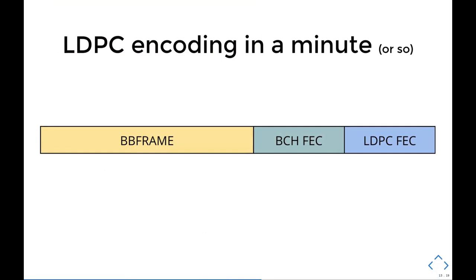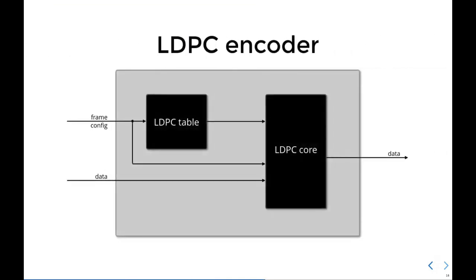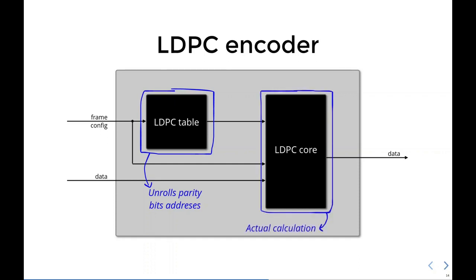To understand the implementation, I'm gonna divide and conquer. The LDPC encoder is actually made up of two sub-components: the LDPC table and the LDPC core. The LDPC table essentially unrolls the parity bit addresses, which means it deals with selecting the correct base parity bit address table given the frame length and the code rate. It will track groups of 360 bits, add Q to the offset correctly, and so on. The LDPC core actually does the parity calculation itself.